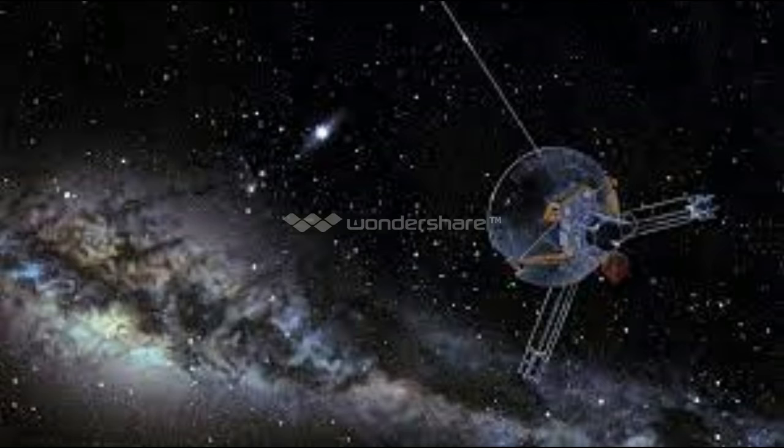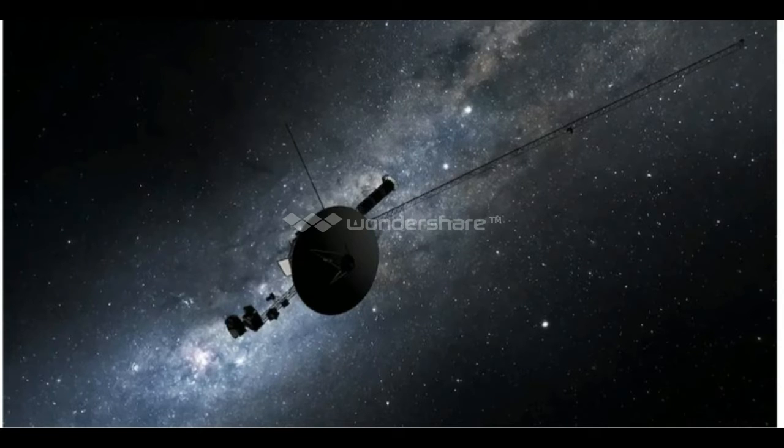In 2012, Voyager 1 became the very first human-made object to venture beyond the boundary of our Sun's influence, known as the Heliopause, and into interstellar space. It's now around 14.5 billion miles from Earth and sending data back from beyond the solar system.